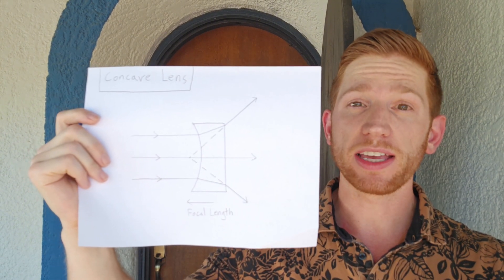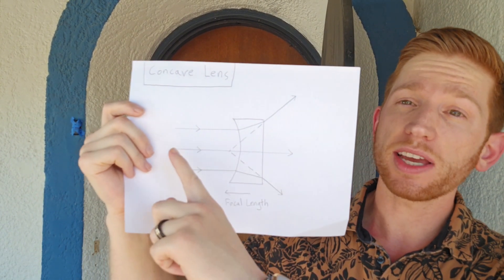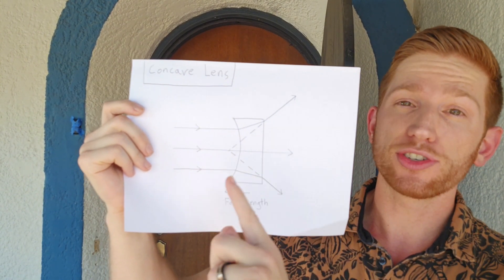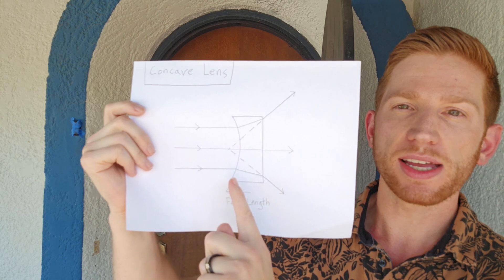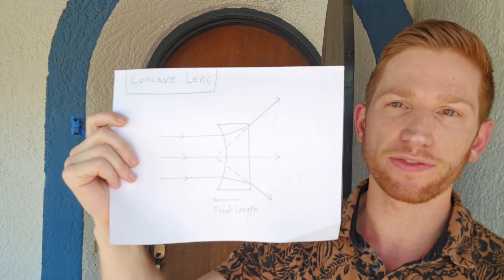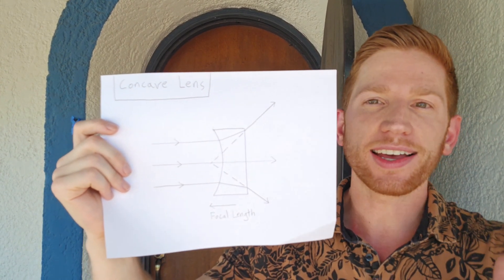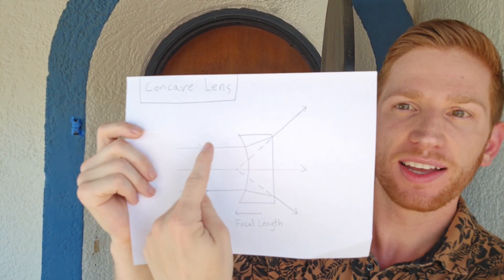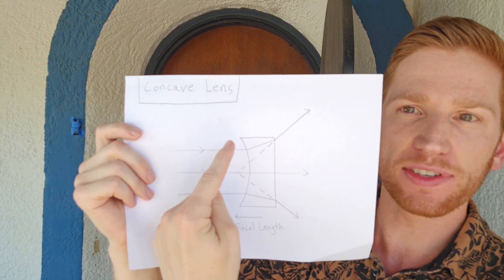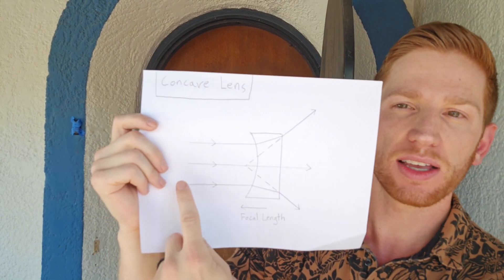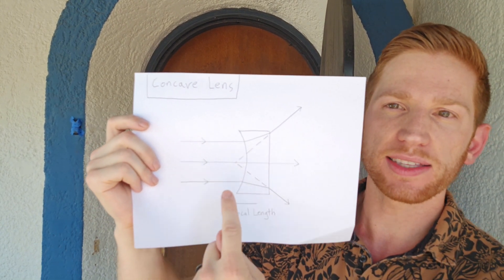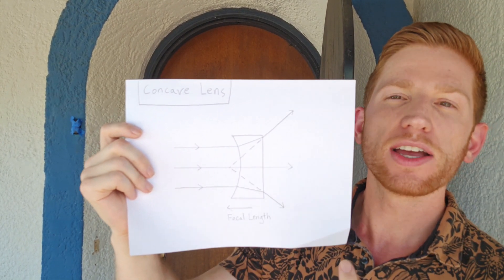A concave lens behaves in the opposite way. Light from the center still isn't changed, but now light coming in from far away hits this concave surface. Think of like a cave — it's a hole in something. The concave surface is like a hole going into the lens. So light hits that and refracts in the opposite way, spreading out as it hits the lens. Light comes into a concave lens and diverges — it spreads out.